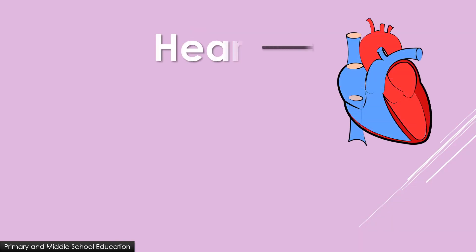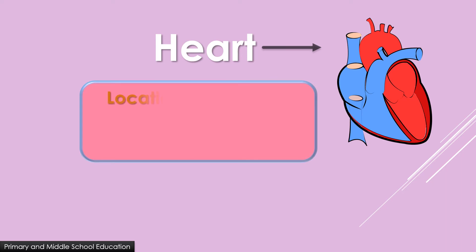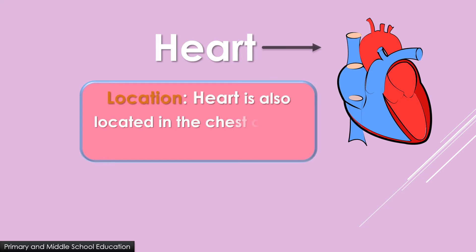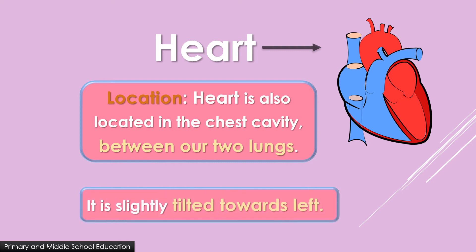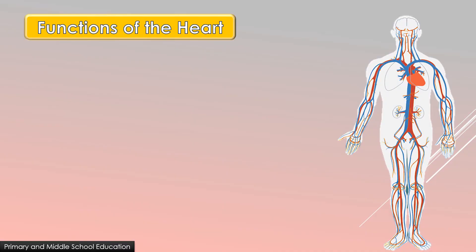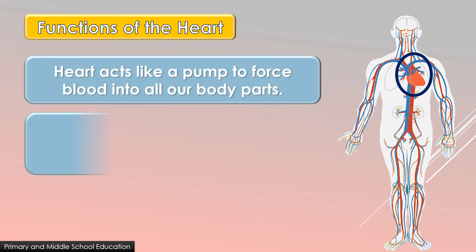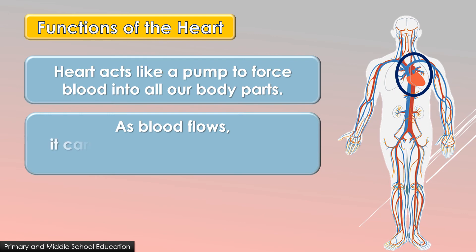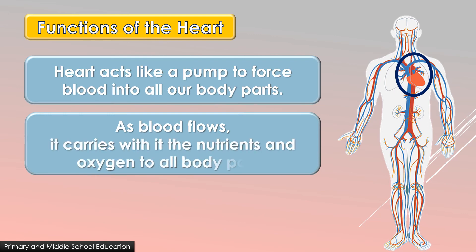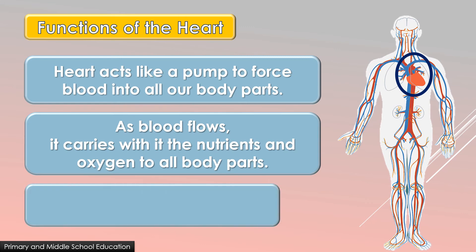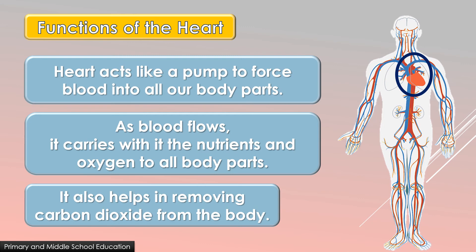Now let us learn about the heart. Location: heart is located in the chest cavity between our two lungs. It is slightly tilted towards the left. Functions of the heart: heart acts like a pump to force blood into all our body parts. As blood flows, it carries nutrients and oxygen to all body parts, and also helps in removing carbon dioxide from the body.